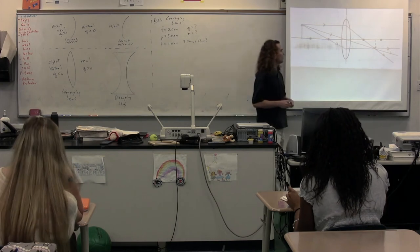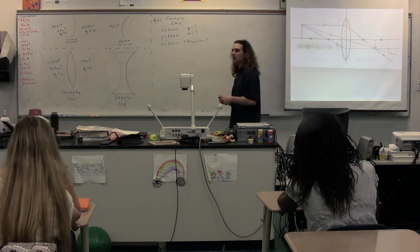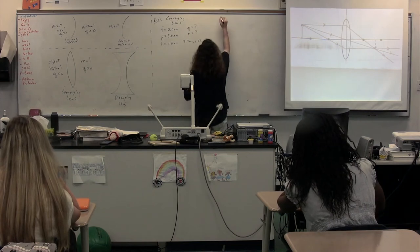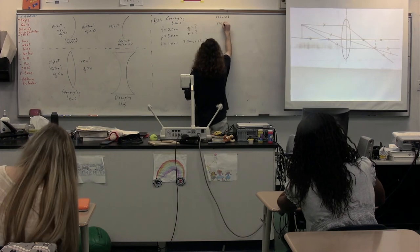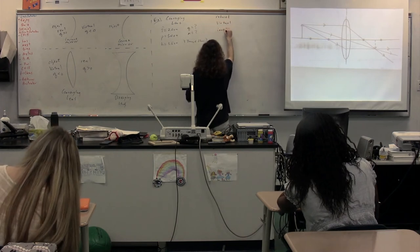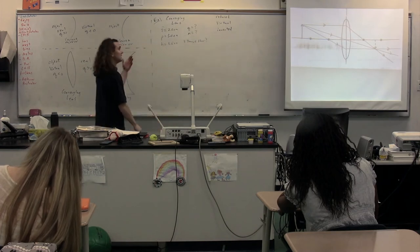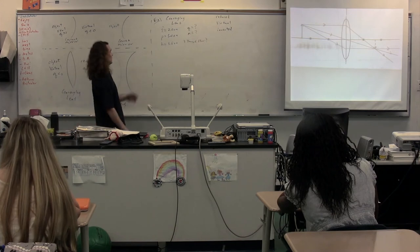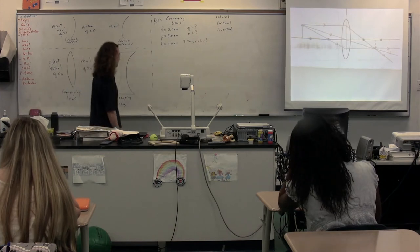That is the ray diagram. We now know the three image characteristics of our image. You can see in the ray diagram it's reduced, real, and inverted. Now we're going to go through and do the math so that we can figure out the image distance and the magnification and confirm our three image characteristics.